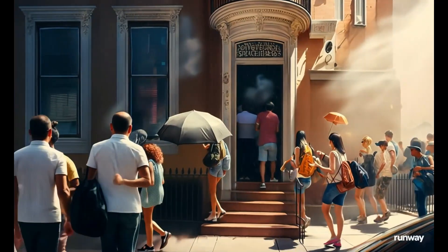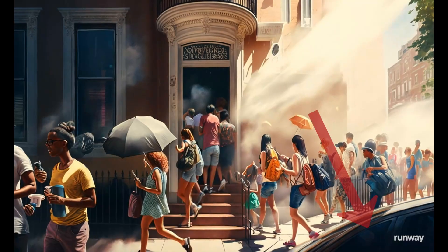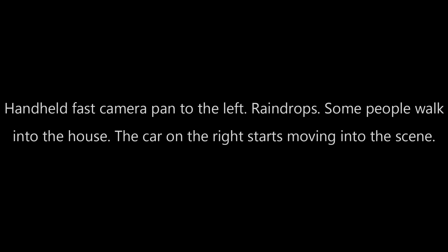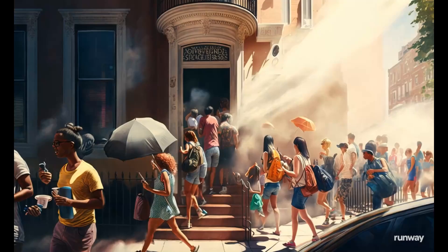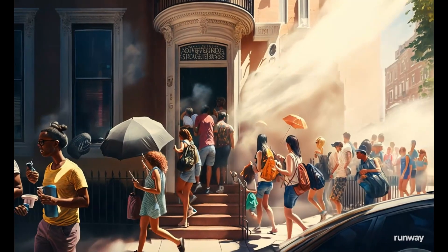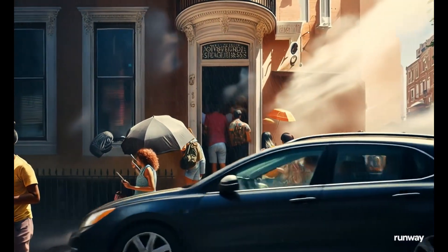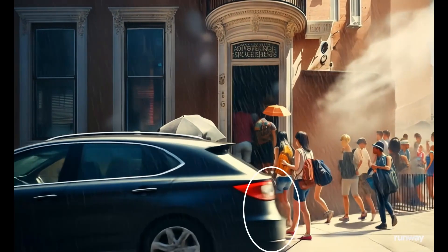I wonder if you've seen the car at the bottom right of the original image. Let's try to animate it. The prompt: handheld fast camera pan to the left, raindrops, some people walk into the house, the car on the right starts moving into the scene. The system obviously understands which car I'm talking about — nicely done with motion blur.